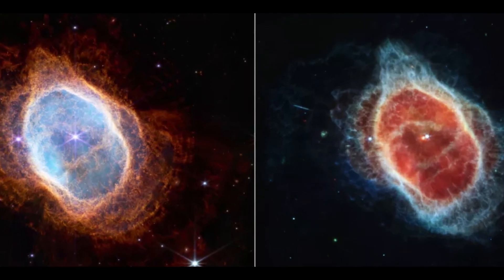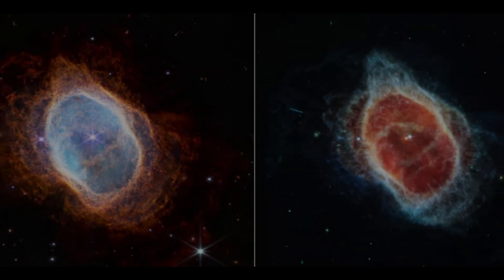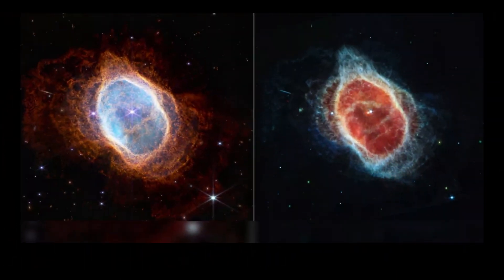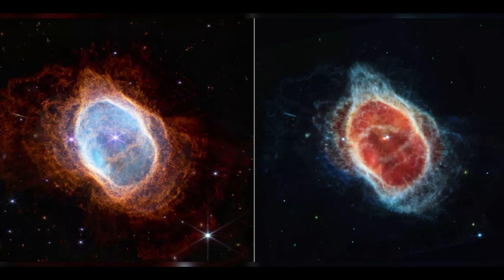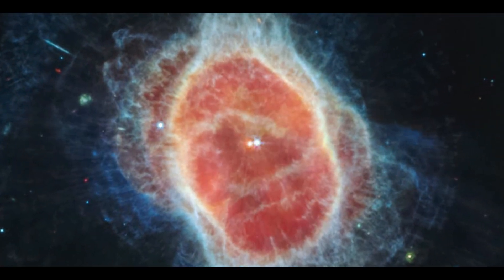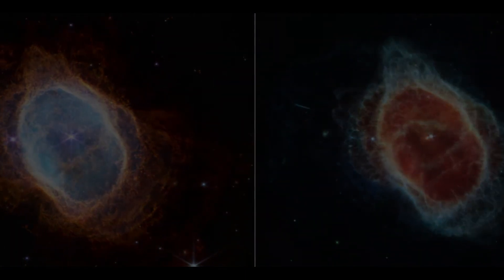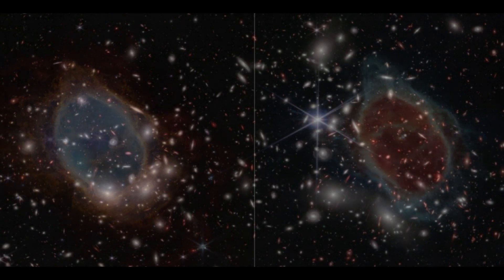Webb's predecessor, the Hubble Space Telescope, had previously imaged the nebula, also known as NGC 3132. However, Hubble's photos, while magnificent, failed to portray the full story of this dust cloud, which arose from the implosion of a dying star the size of the sun only 2,500 years ago.